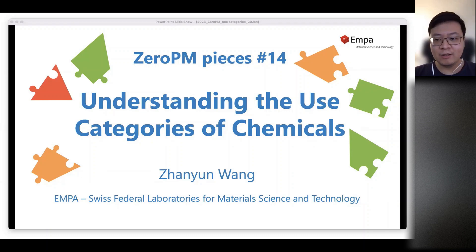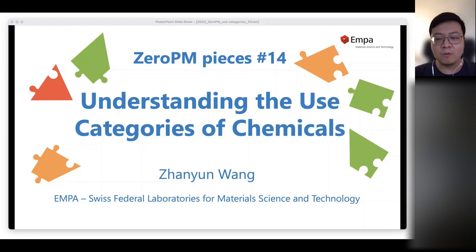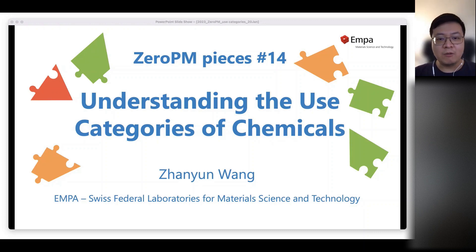Many thanks for the organisation. I'm really happy to share some of the work that we are doing on the use categories. The title will be: understanding the use categories of chemicals — the opportunities and the current challenges. My name is Jiayun Huang and I'm from EMPA, the Federal Laboratories for Materials Science and Technology.